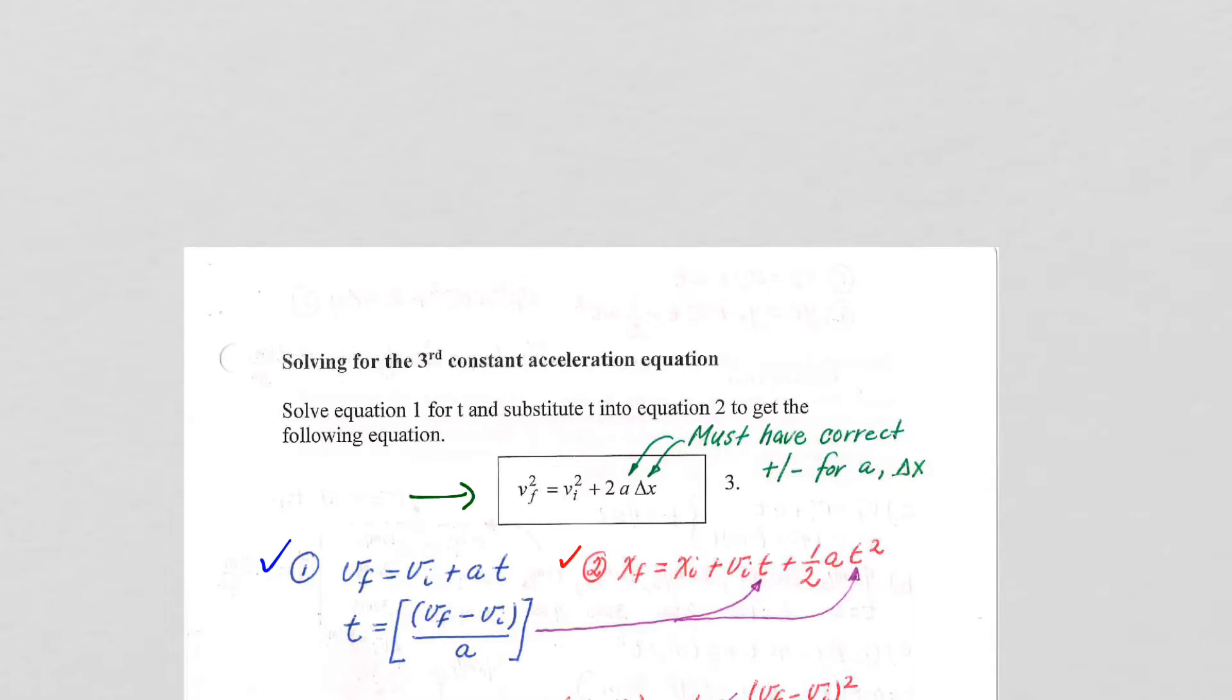So if we take equation 1, v_final equals v_initial plus acceleration times time, we solve it for t.